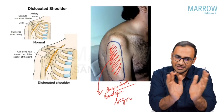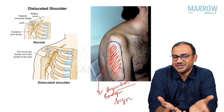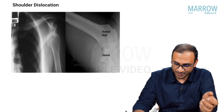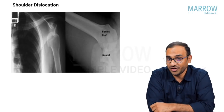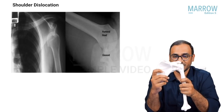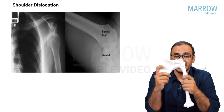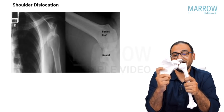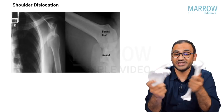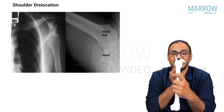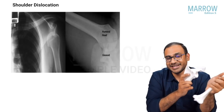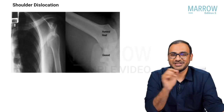Once you have assessed all these findings clinically, confirm the diagnosis with an X-ray. On AP view, you will find the head of the humerus is not in the glenoid. However, on AP view alone you cannot distinguish anterior from posterior dislocation — they look the same. You must take a lateral view, and on the lateral view you will appreciate whether the dislocation is anterior or posterior.